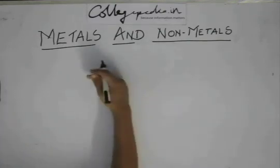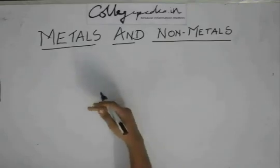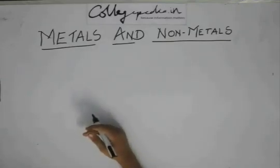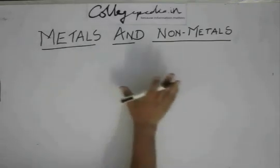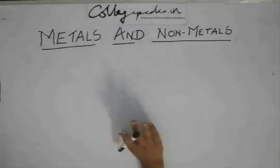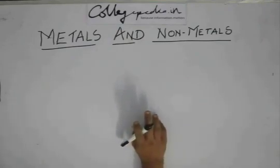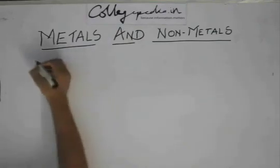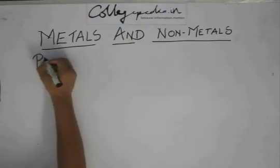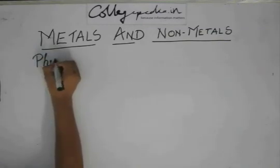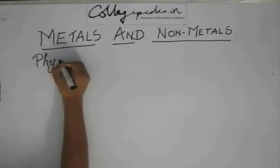Actually, metals and non-metals are decided by physical and chemical properties. You can't say for sure by just looking at a definition whether it is a metal or a non-metal. You have to see a set of properties. So, let us first look at some physical properties.